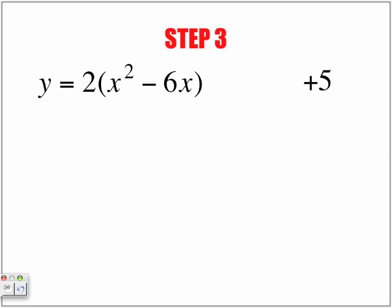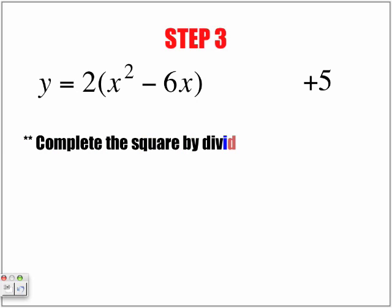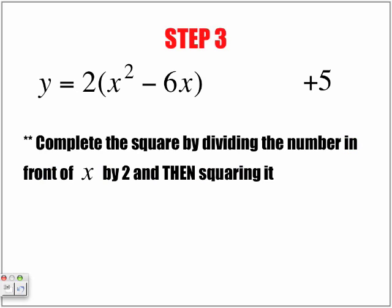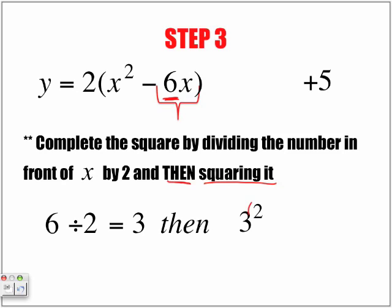So here we have, or we do have an a value with this y, and we've already factored it out in step 2. Step 3 now tells us, complete the square by dividing the number in front of x by 2, and then squaring it. So we're going to take that value, we're going to divide it by 2, and square it. So the value is a 6. We're going to divide it by 2, and we get 3. Once we get that value then, we're going to square that answer. So 3 to the power of 2 is going to give us 9.